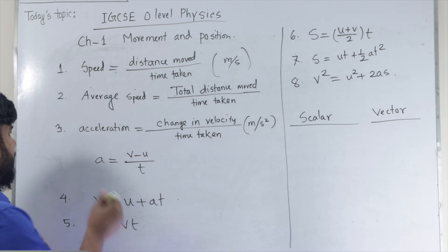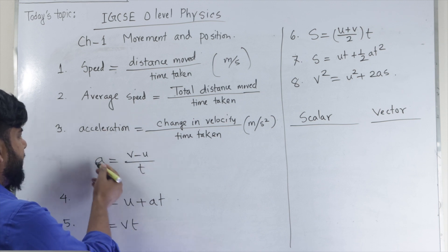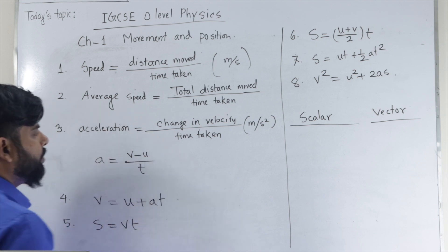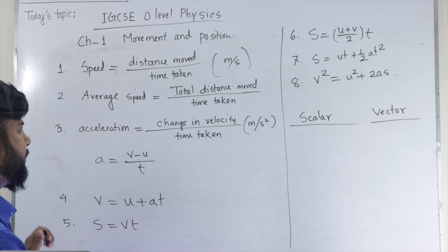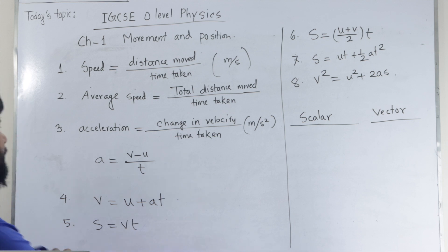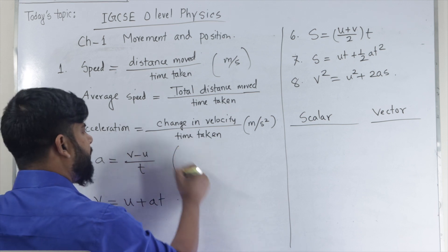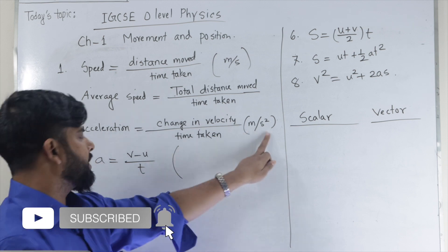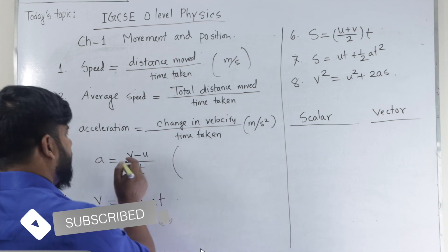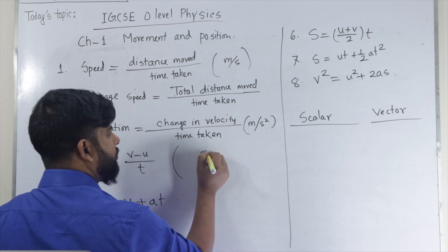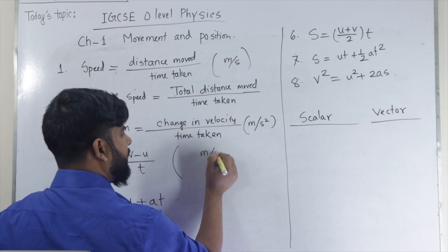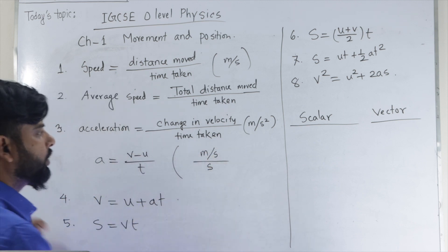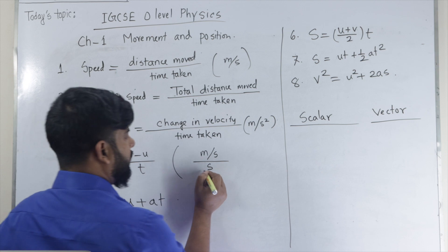So we can write symbolically: acceleration A equals V minus U divided by T. Sometimes there is a question — why is the unit of acceleration meters per second squared? Change in velocity: the unit of velocity is meters per second, divided by another second.